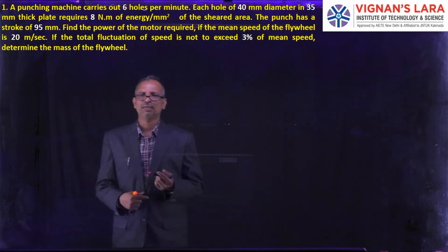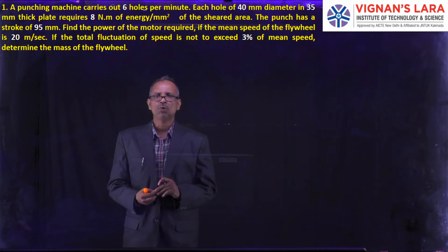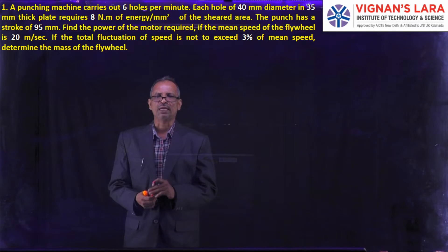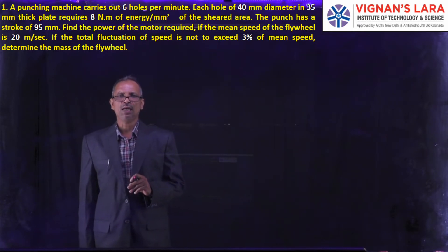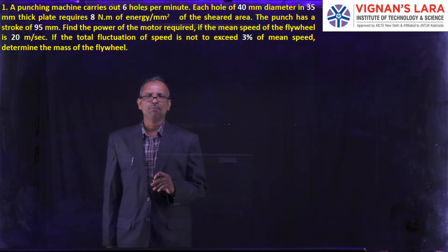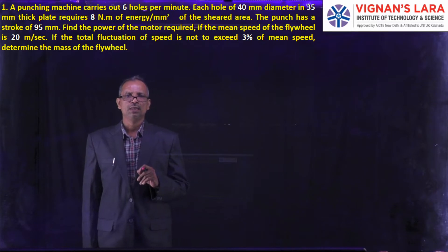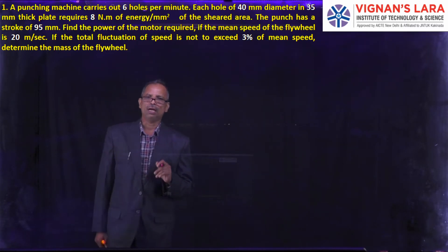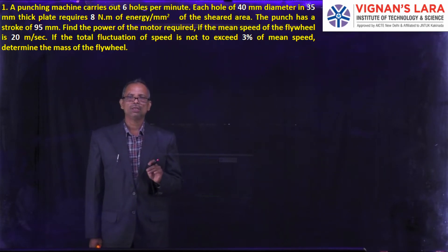The problem is given as follows: A punching machine carries out six holes per minute. Each hole of 40 mm diameter in a 35 mm thick plate requires 8 Newton meters of energy per mm² of the sheared area. The punch has a stroke of 95 mm. Find the power of the motor required if the mean speed of the flywheel is 20 m/s. If the total fluctuation of speed is not to exceed 3% of the mean speed, determine the mass of the flywheel.